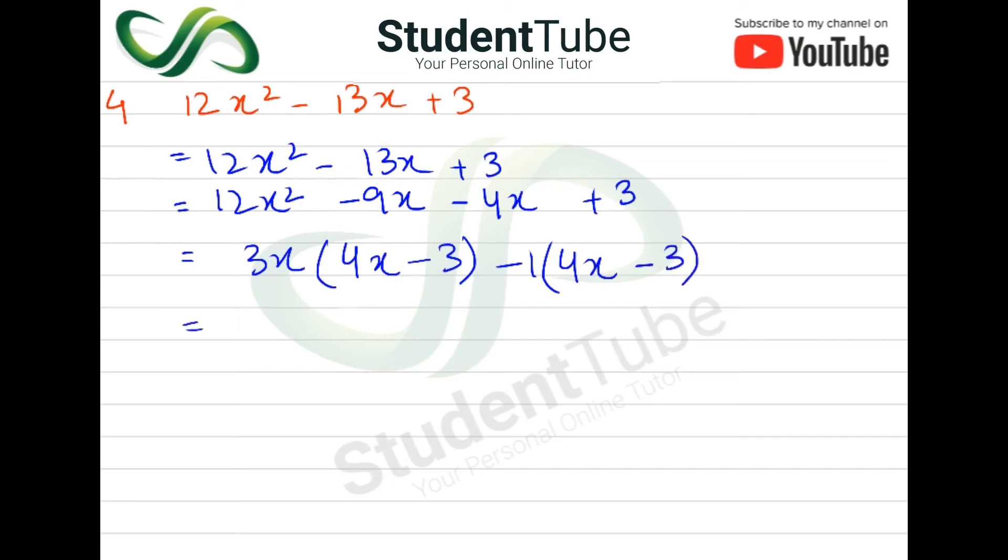Now both brackets are the same, so here 4x - 3 will come out common, and the next bracket will come out 3x - 1. Answer.